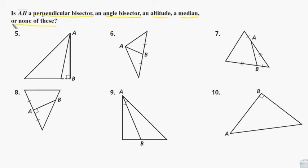A perpendicular bisector goes through the midpoint of one of the sides and is perpendicular to that side. An angle bisector splits an angle in half. An altitude goes through a vertex and is perpendicular to the opposite side. A median goes through a vertex and the midpoint of the opposite side.